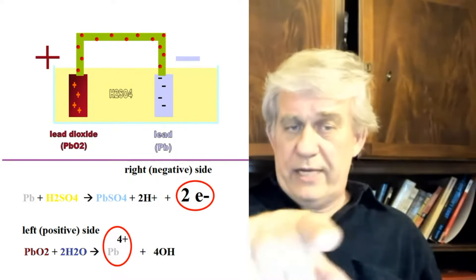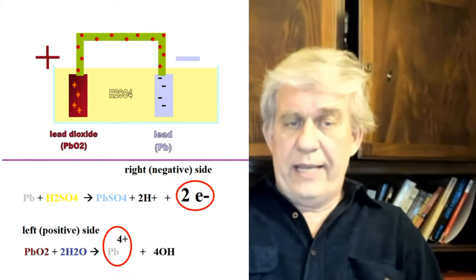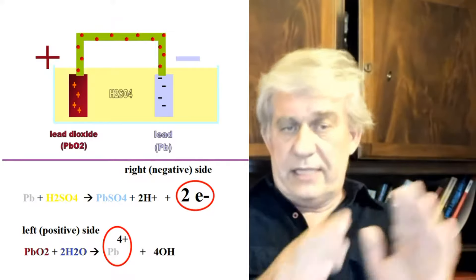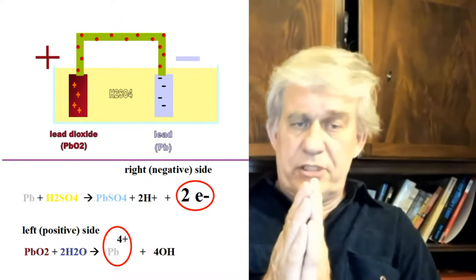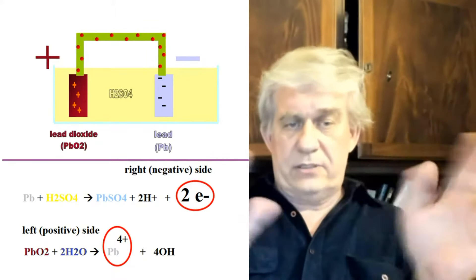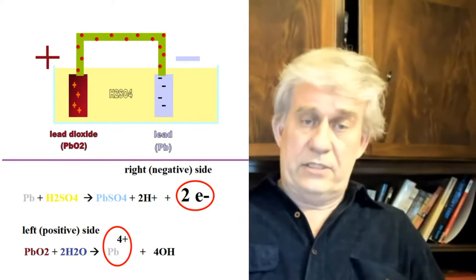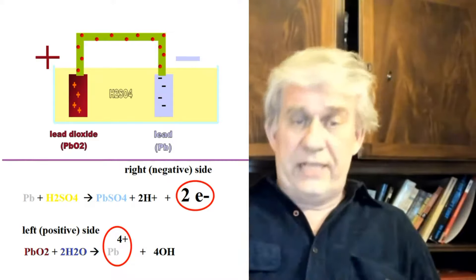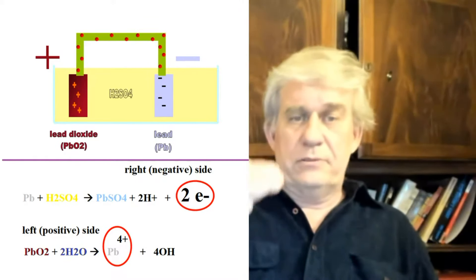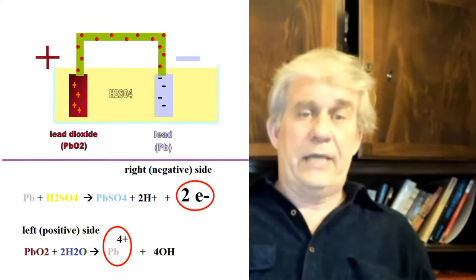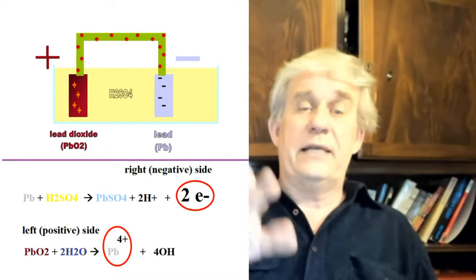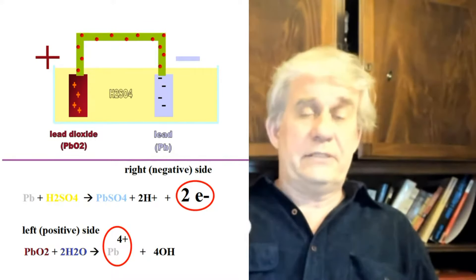On the right-hand side, we had lead (Pb). With sulfuric acid in water reacting against that plate, it releases two hydrogen ions and two electrons. These two electrons are what charge that plate negatively — they're fed into whatever cable you connect to that terminal. That's why that plate is negative: because two electrons are being released.